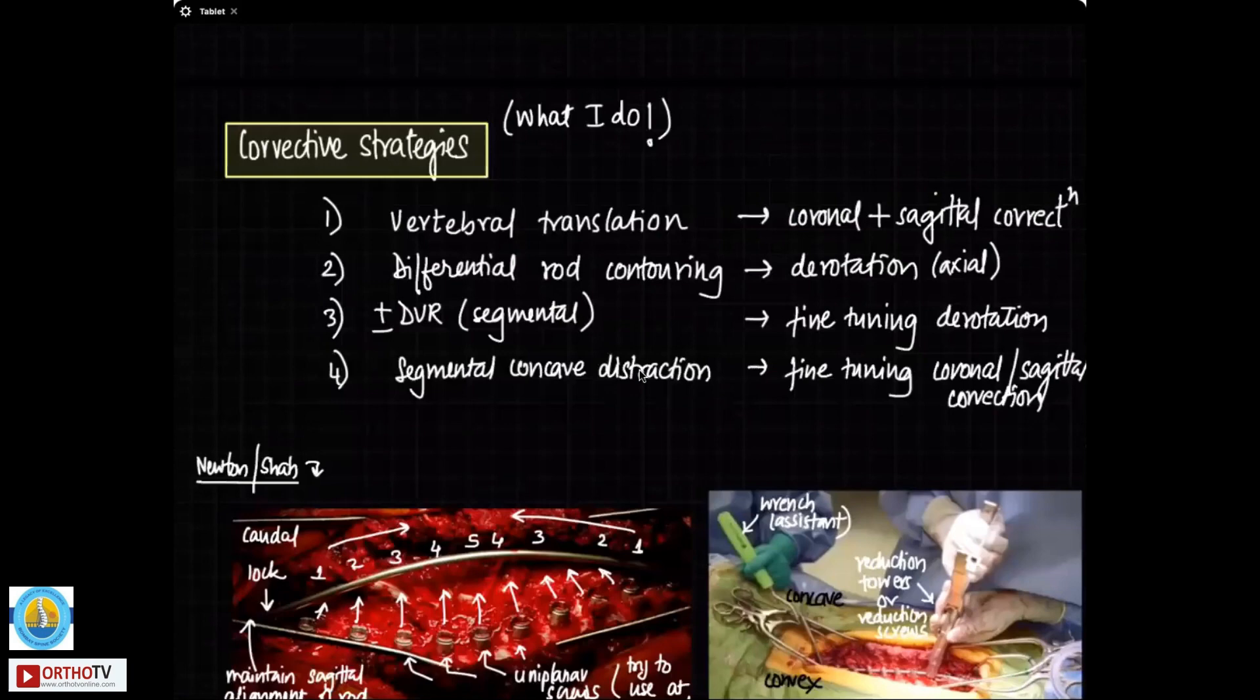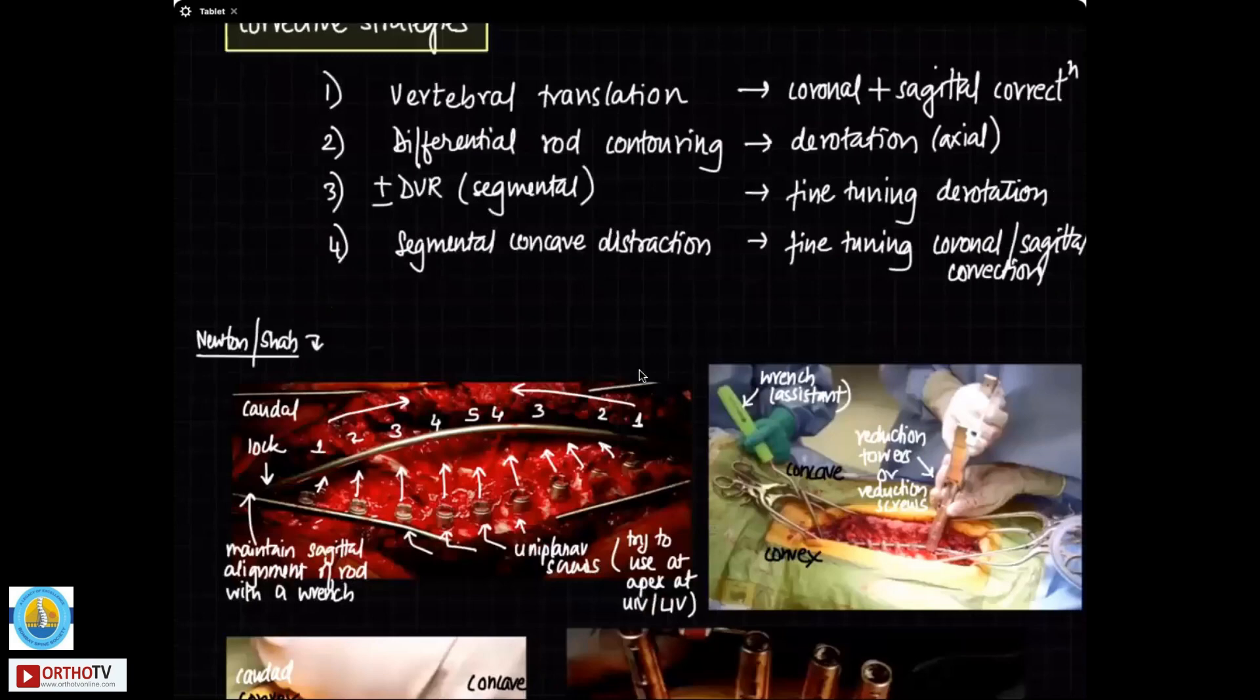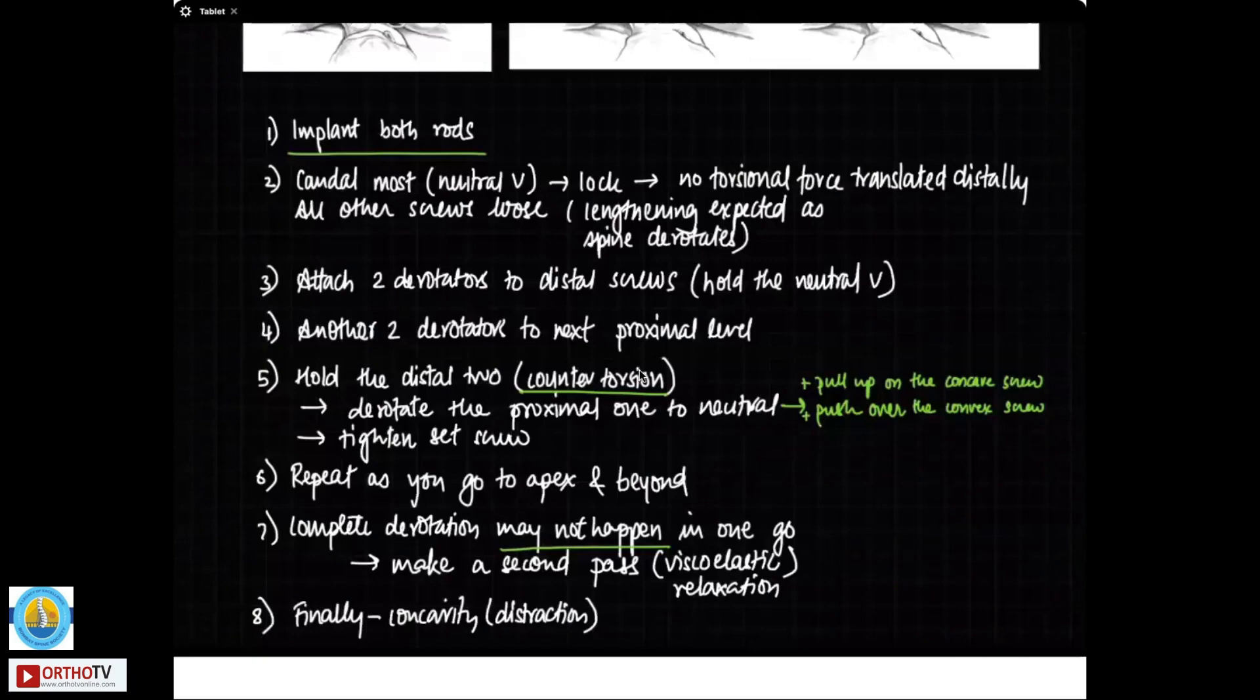These are the corrective steps. This is what I do. I think we have gone through these steps yesterday as well in the previous talk. Again I will repeat vertebral translation using a concave over contoured rod which has a differential rod contouring. And then fine tuning is done using DVR if required. And then segmental concave distraction and fine tuning as per needed. Here you can see that we have already shown you this yesterday. Let me take you to the steps of the surgery here.